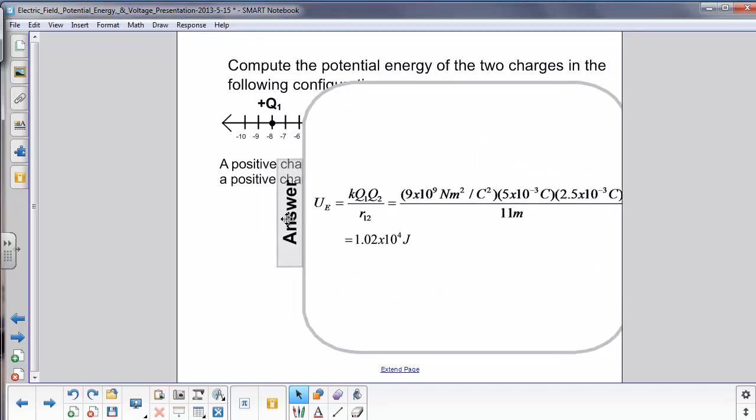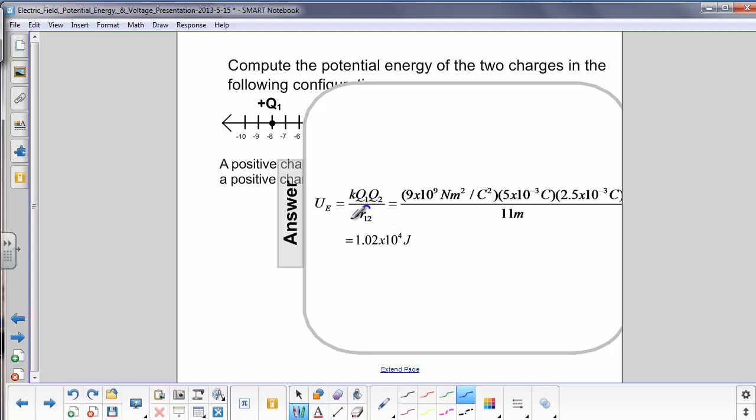So we use the equation for the potential energy, where the potential energy is KQQ over R12, where R12 is the distance between charges 1 and 2.